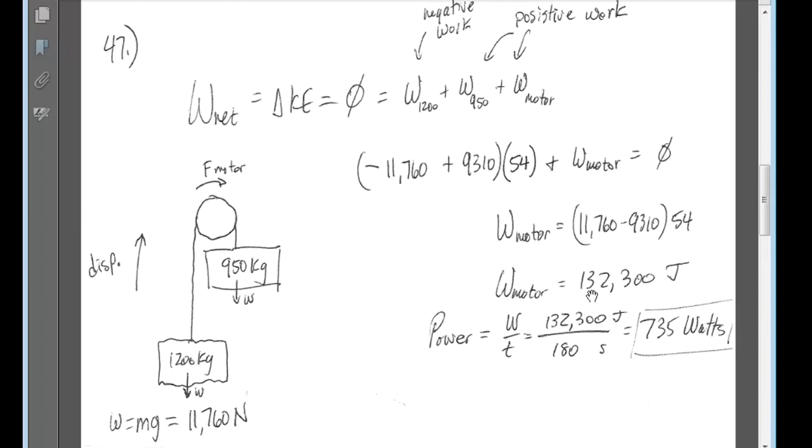And the power then is the work divided by the time, but remember the watt, which is our unit of power, is a joule per second, not a joule per minute. So don't divide by three minutes, you have to convert three minutes to seconds, so 180 seconds.